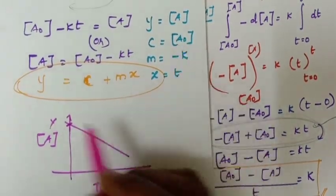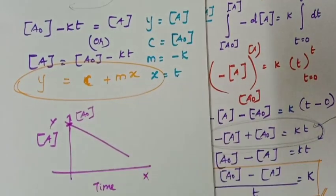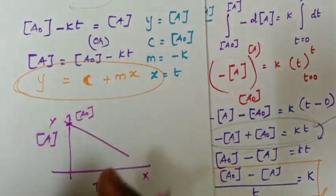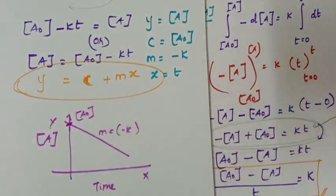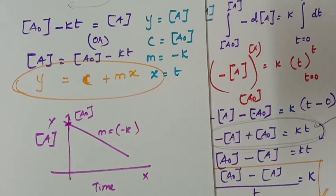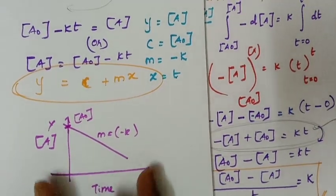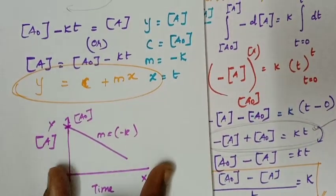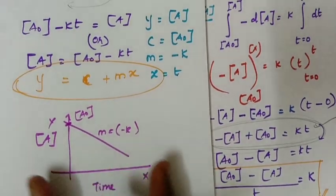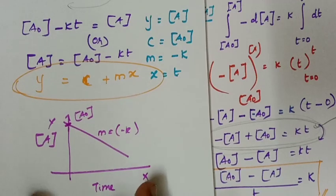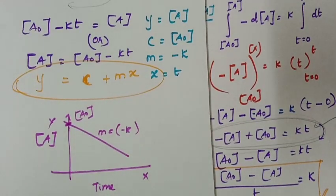On the graph, the y-intercept gives the initial concentration A₀, and the negative slope of the straight line gives minus k. That's all about the integrated rate law for zero order reaction. Please like, share, and subscribe. Thank you.